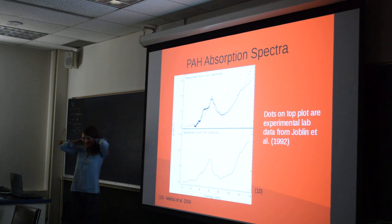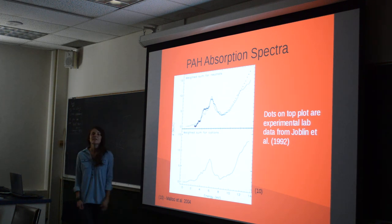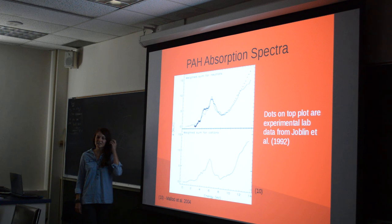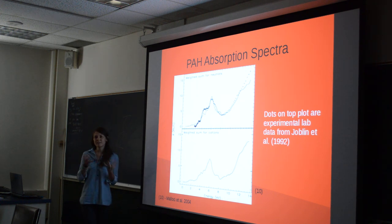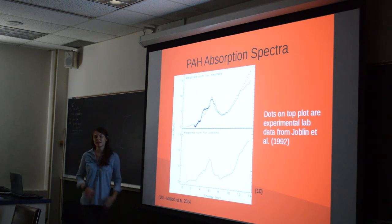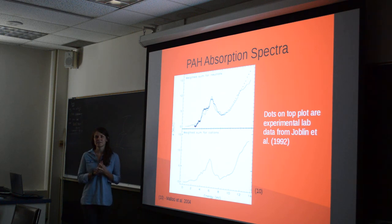The 13.6 eV threshold is interesting — it's tied to hydrogen ionization. In HII regions, PAHs are not found. So ionized hydrogen and PAHs don't exist in the same areas.